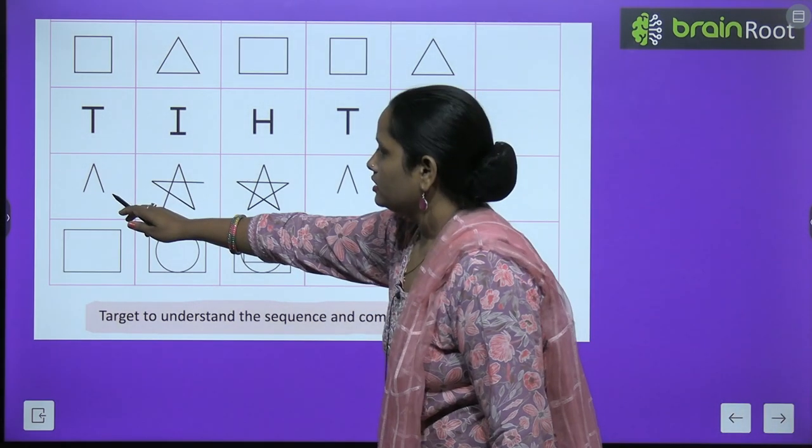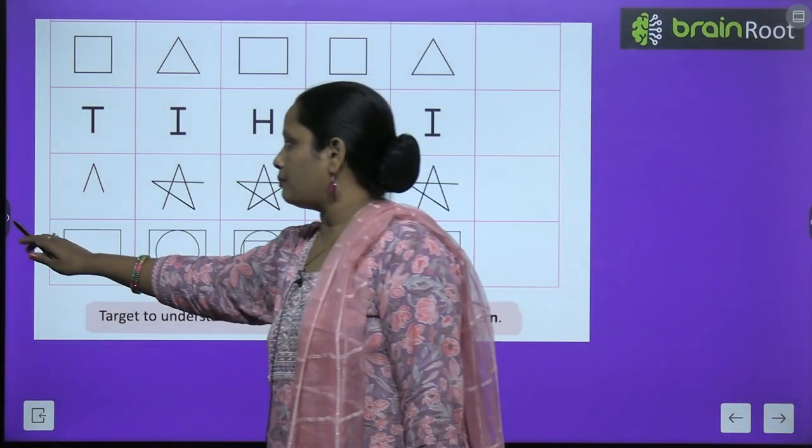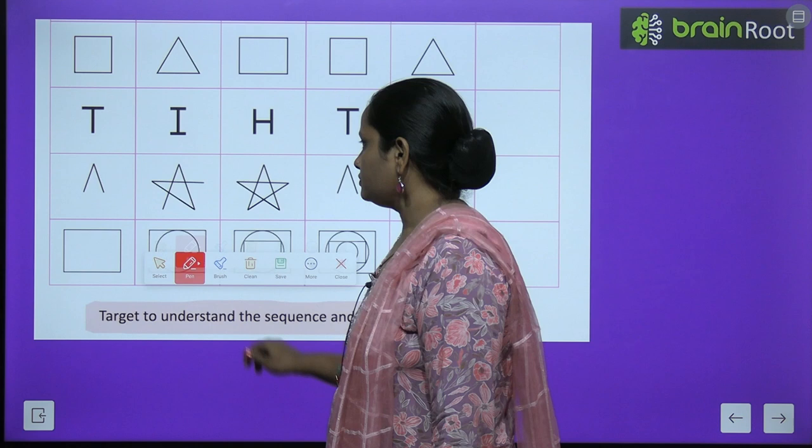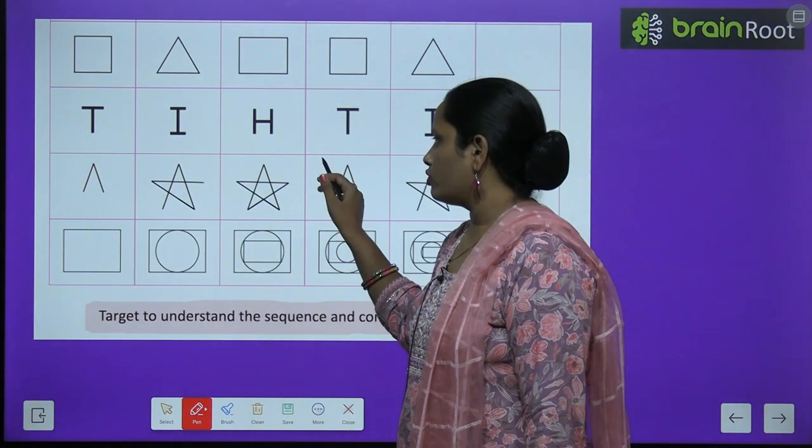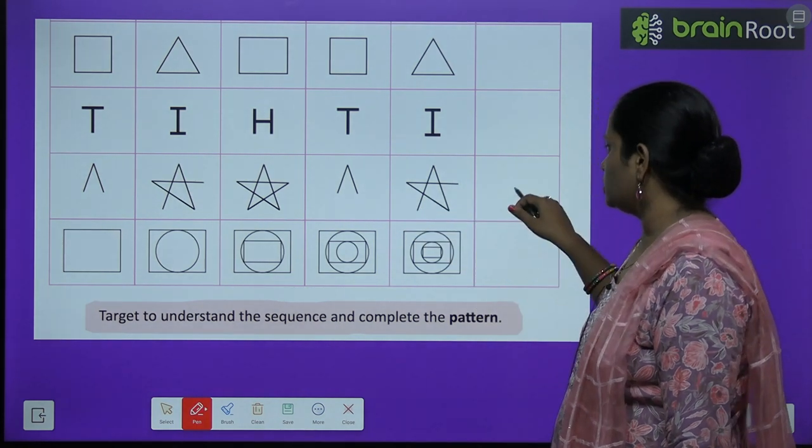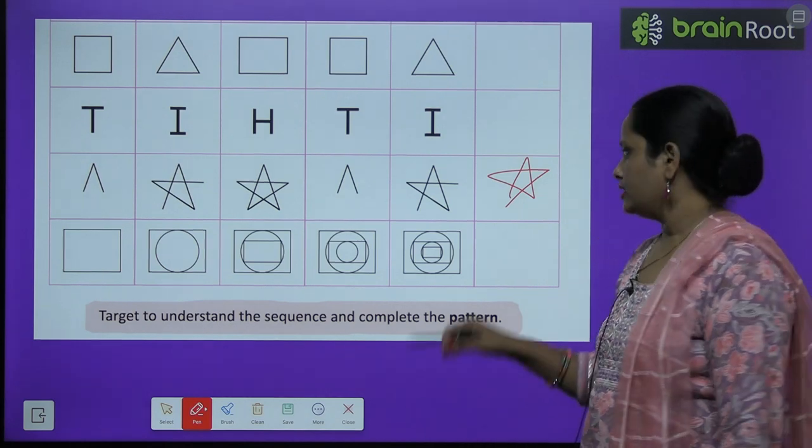Now what is here? You can see it, right? A star is being made, right? So what did you do here first? First you made an upper arrow. Next, you continued this arrow. And then made a star. Here you made an upper arrow, continued the arrow, and then here we have made the star.